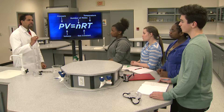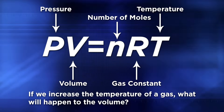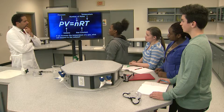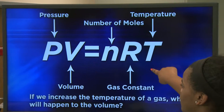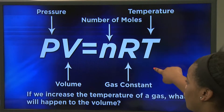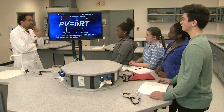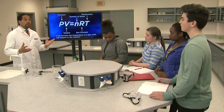Let's look at another relationship in the ideal gas law. If we increase the temperature of a gas, what will happen to the volume? Kayla, what do you think? Well, looking at the ideal gas law, PV equals NRT, temperature is on one side and volume is on the other side, so they're directly related. So you're saying if temperature increases, volume will increase? Yes. Alright, let's see what happens.